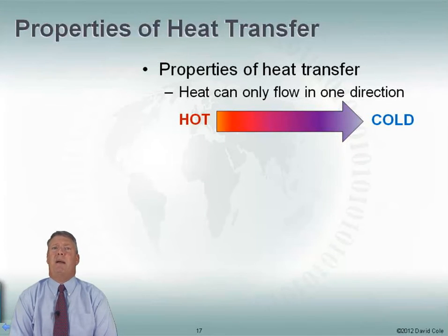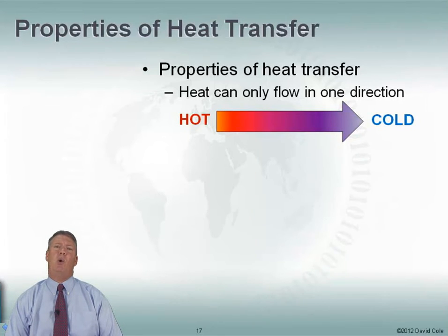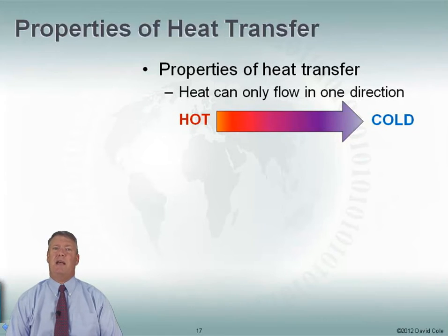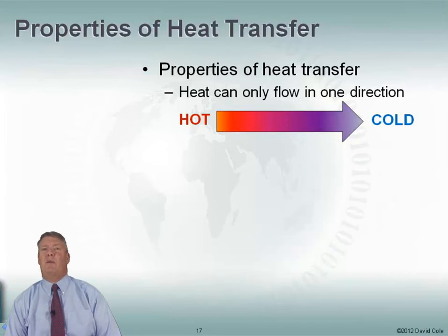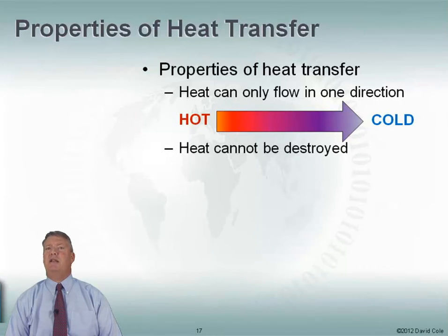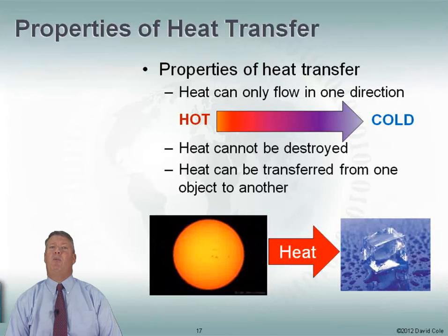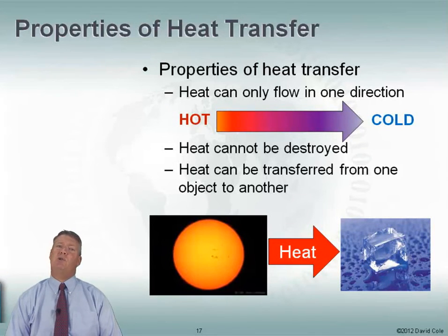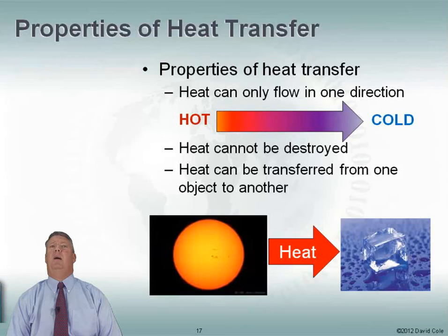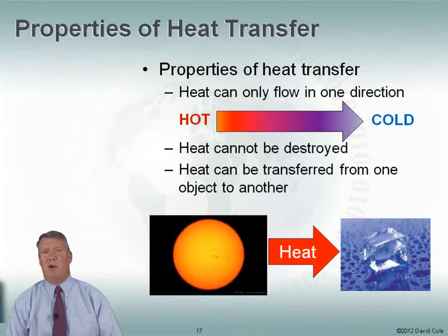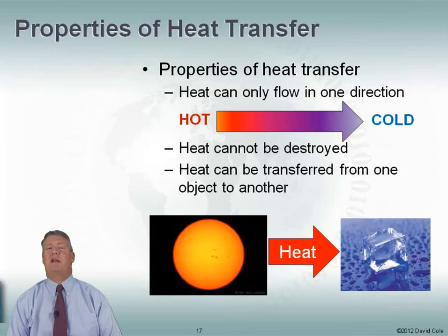Here's heat transfer — everything I remember from the semester. Properties of heat transfer: heat can only flow in one direction — it only goes from hot to cold. I can't put cold onto something; I can only remove heat from something. Heat cannot be destroyed. I can't just destroy the heat in my data center, but what I can do is transfer it — move heat from one object to another. In our case, we want to move it from the data center to the outside.